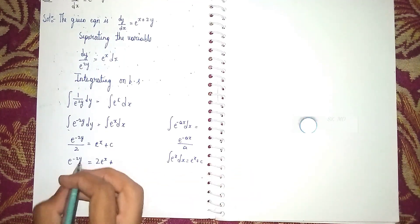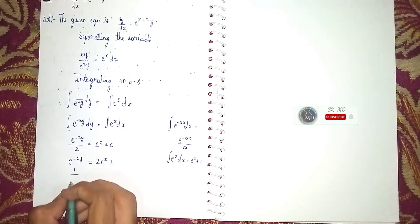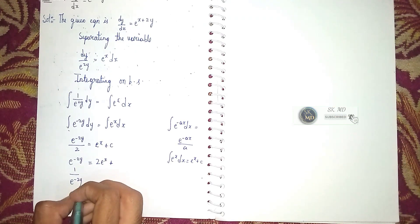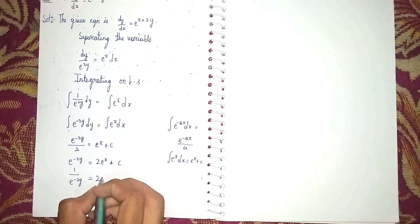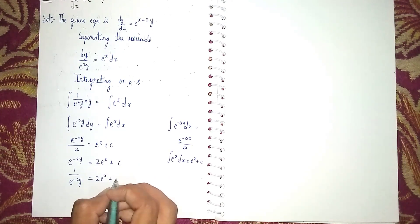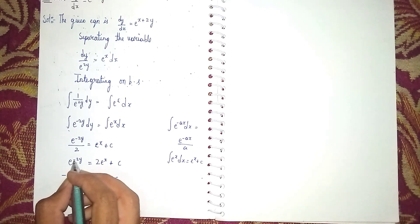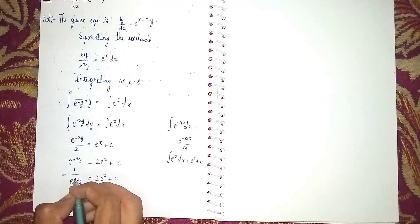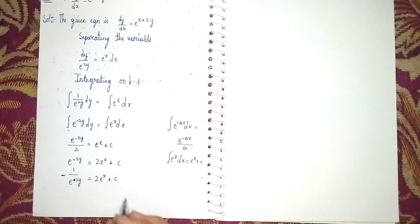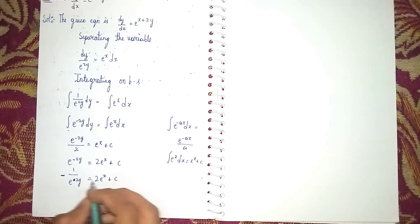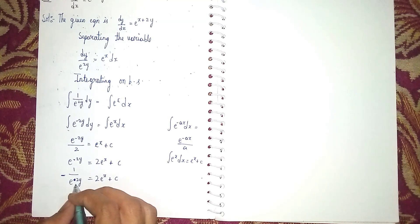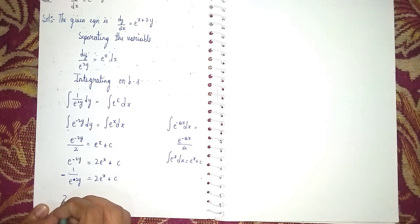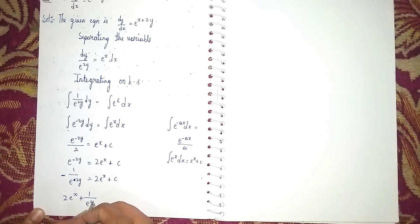Now we need to make e^(-2y) positive. Sending it down gives 1/e^(2y). Rearranging with the minus sign becomes positive, so our answer is: 2e^x + 1/e^(2y) = c.